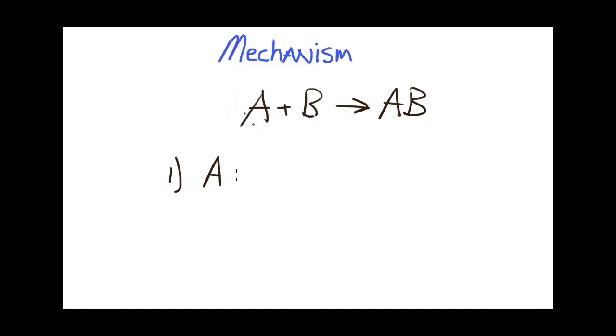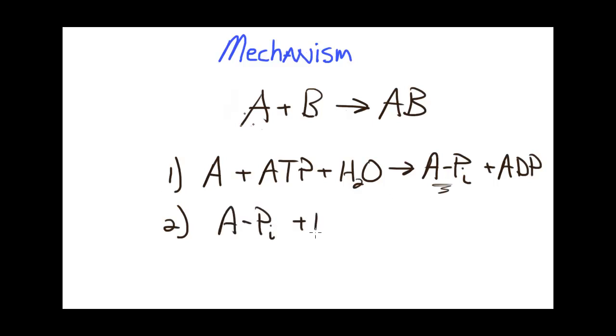to form a new complex, which I'll call A-phosphate plus ADP. And it's because this substance is formed that in a subsequent step, it can react with B to form AB, releasing the phosphate.